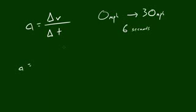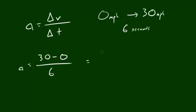So now let's go ahead and figure out this baby. So acceleration equals the change in velocity which is 30 minus 0 over the change in time which is 6 seconds.